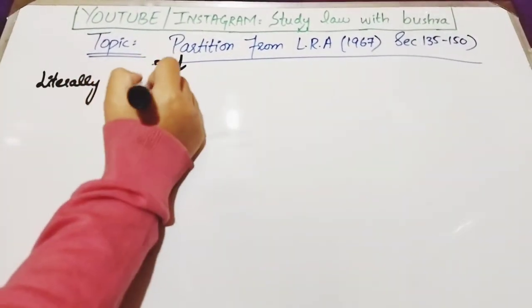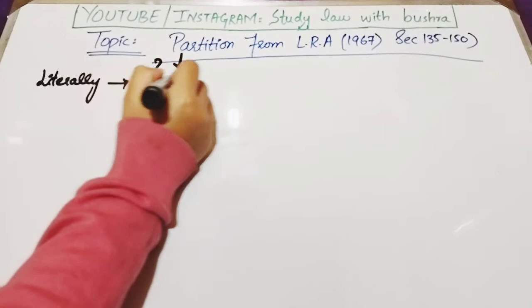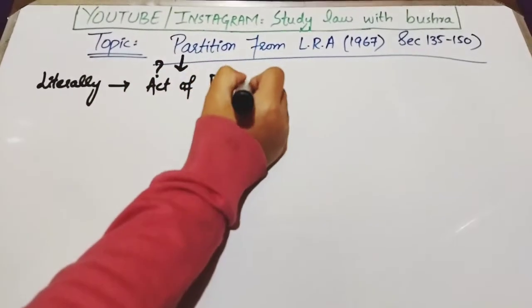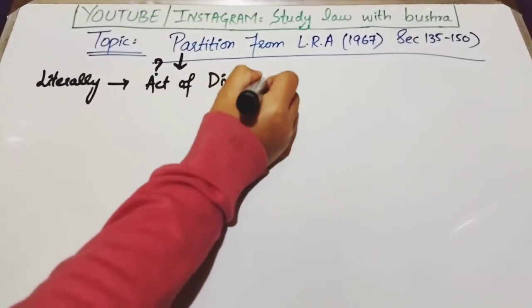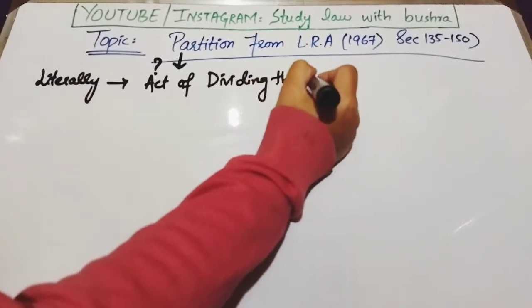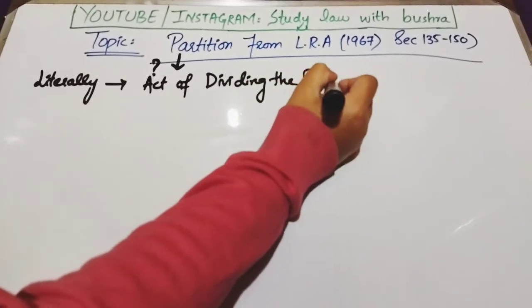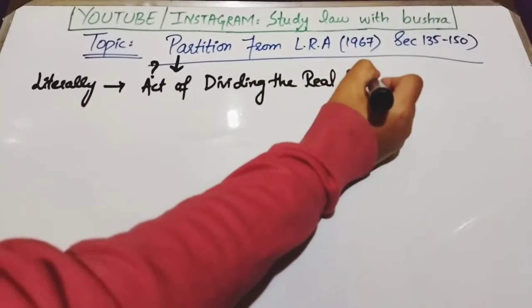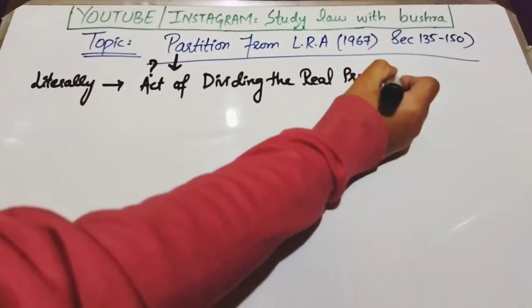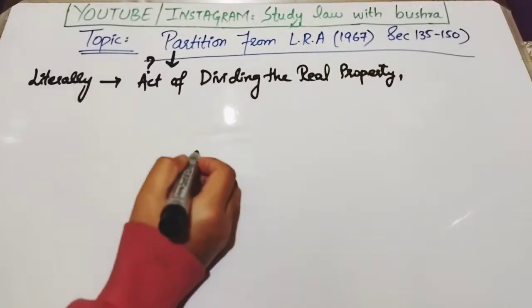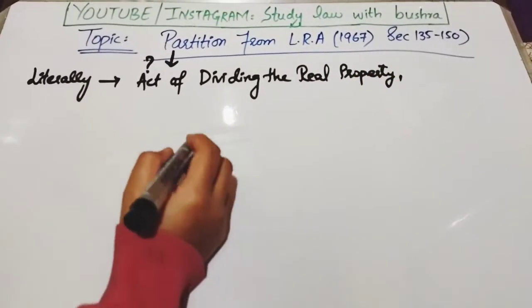First we will look into the meaning of the word partition. What does the word partition mean? If we look into the literal meaning, partition simply means the act of dividing real property when it is held jointly by two or more persons.